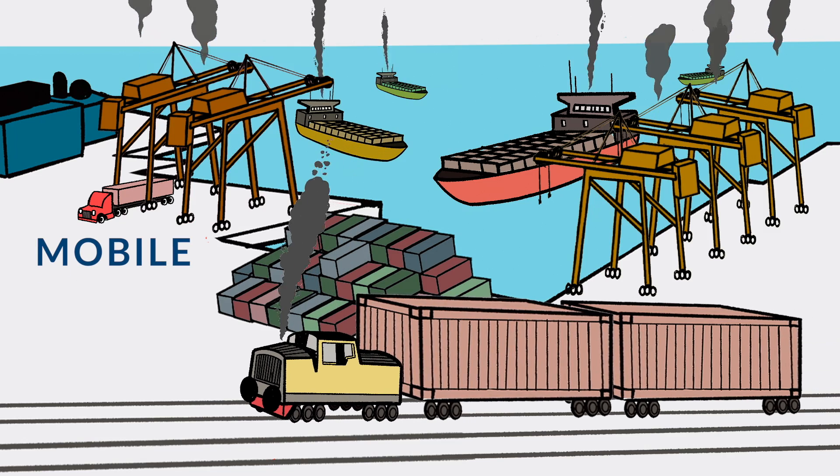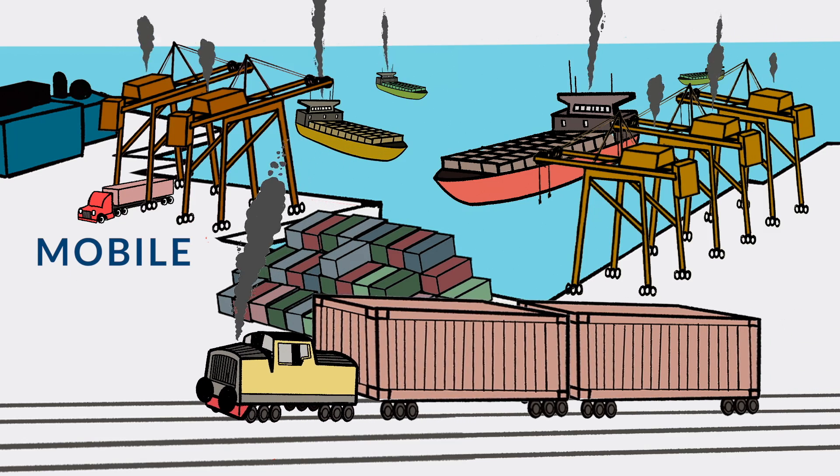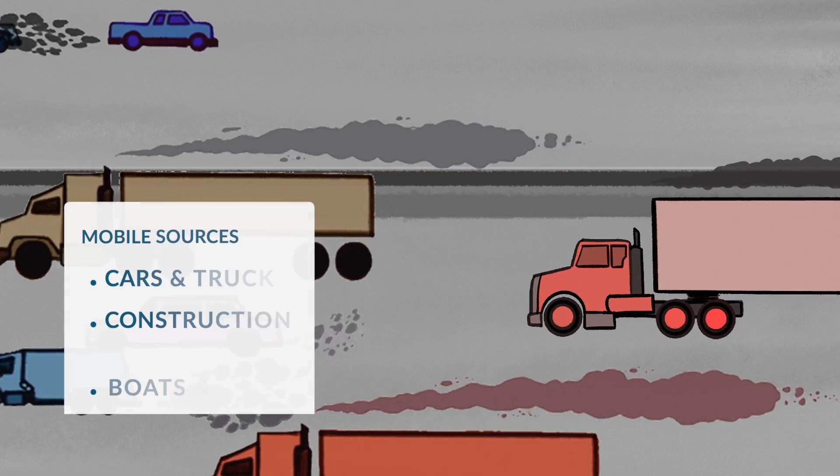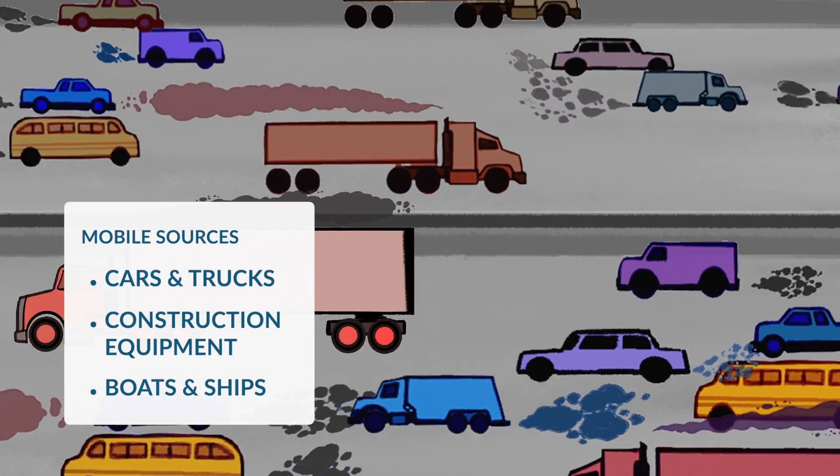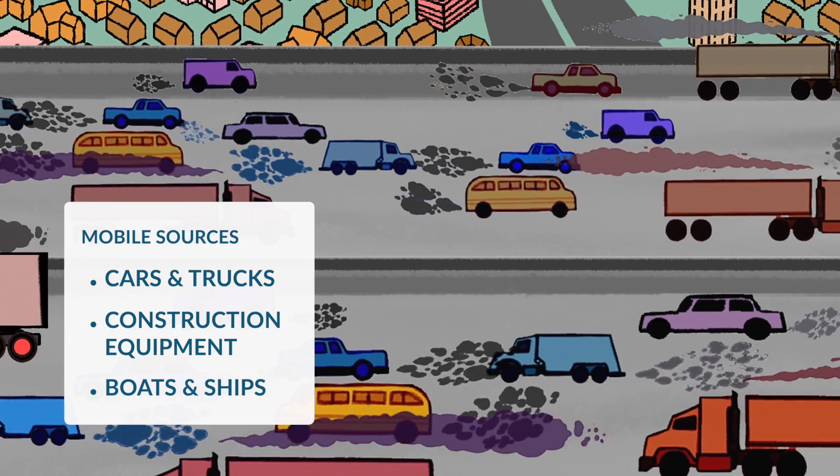Mobile sources are movable producers of air pollution and greenhouse gas emissions. Some examples of mobile sources include cars, trucks, construction equipment, boats, and ships.